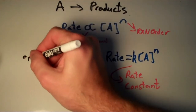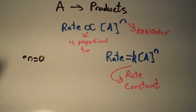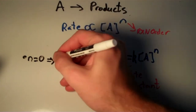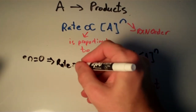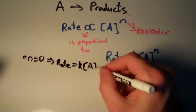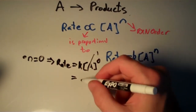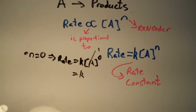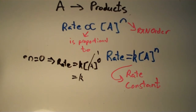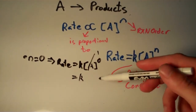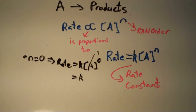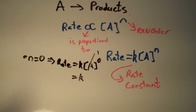Suppose n is equal to zero. Then the rate is equal to K times the concentration of A to the zero power, and anything to the zero power is one, so the rate is simply equal to K. We call this a zero order reaction. Zero order reactions are interesting because the rate doesn't depend on the concentration of the reactant at all — you can have a very concentrated or very dilute solution, and the rate will be the same.